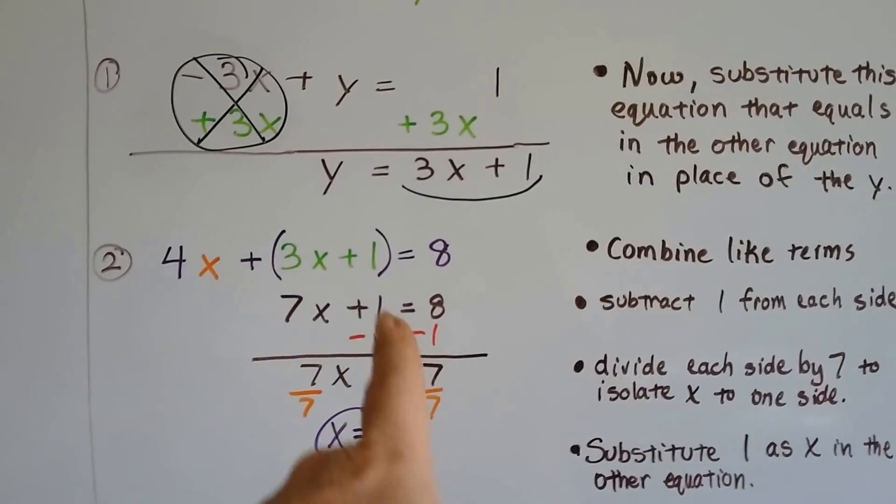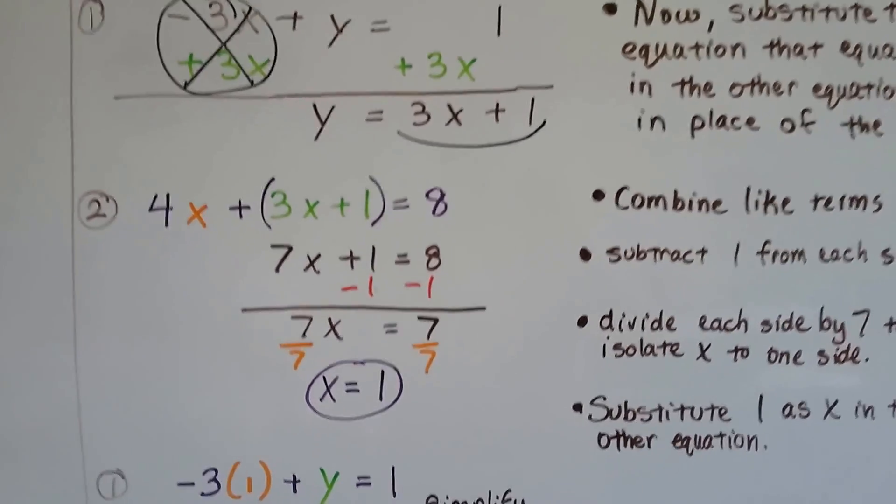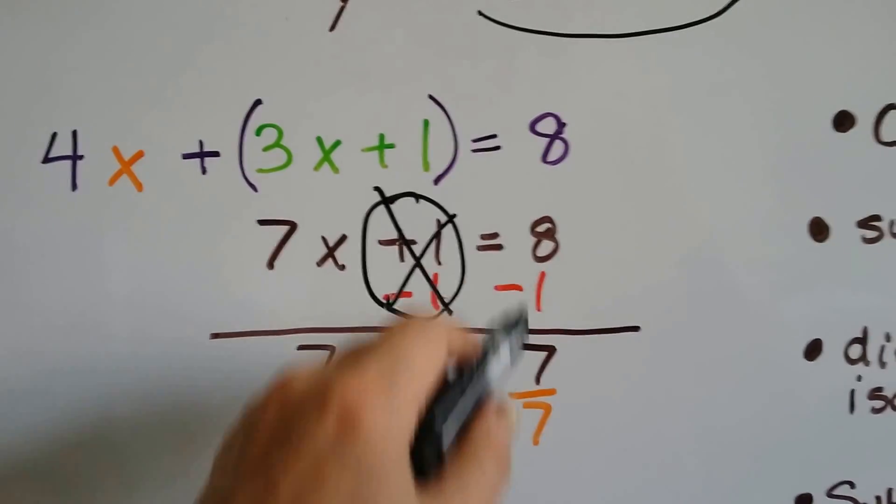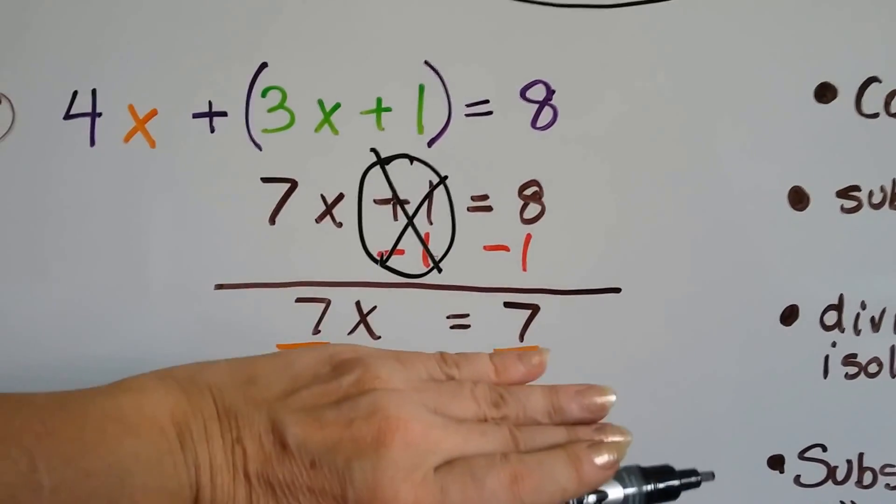We can subtract 1 from each side, because we want to get x by itself. This creates a zero pair right here, and we eliminate that, and 8 take away 1 is 7. Now we have 7x equals 7.